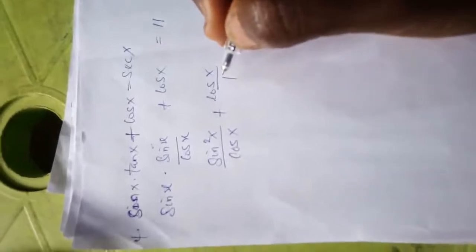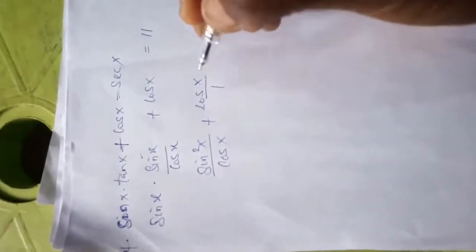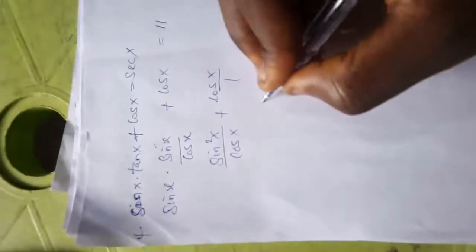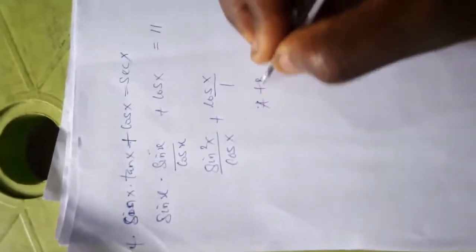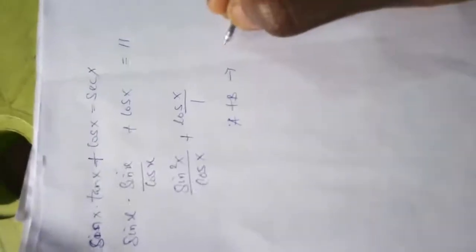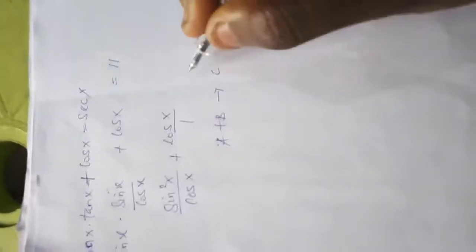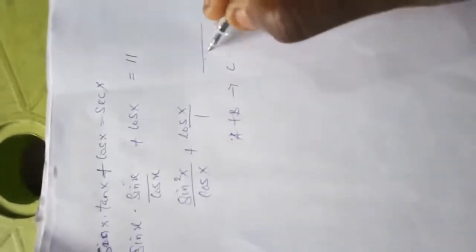Now this is where I have to apply my fourth trick. The fourth trick says if you have a plus b, you can resolve it to a single fraction. So if you have two fractions, you can resolve it to a single fraction. So what I will simply do here is look for the LCM.